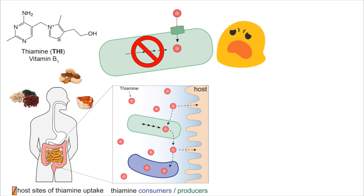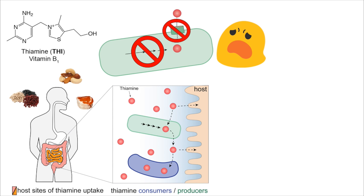We found that a deletion of the biosynthetic operon severely impacts B-theta's ability to grow and compete. Likewise, a deletion of the transport system has an even more drastic effect on B-theta's fitness. Unsurprisingly, the removal of both systems is extremely detrimental.